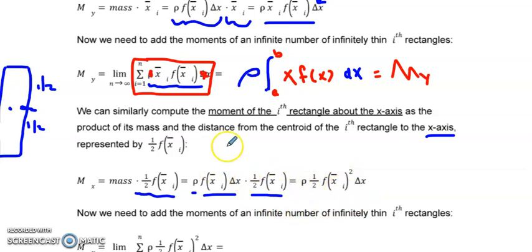And all I've done here is multiply out, I took f of x bar sub i and f of x bar sub i, and now I have it squared. And I have the one half out in front, and then I have the delta x.